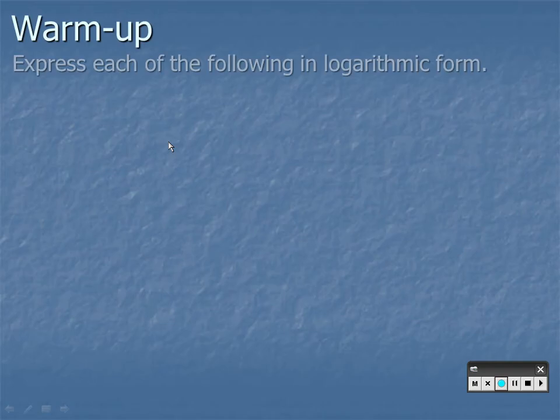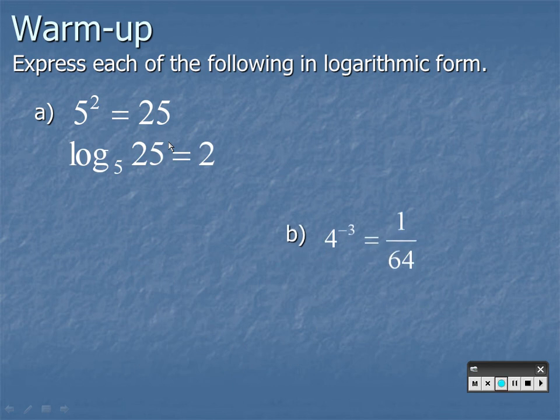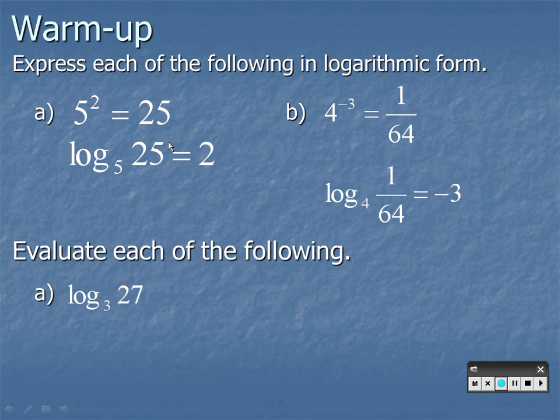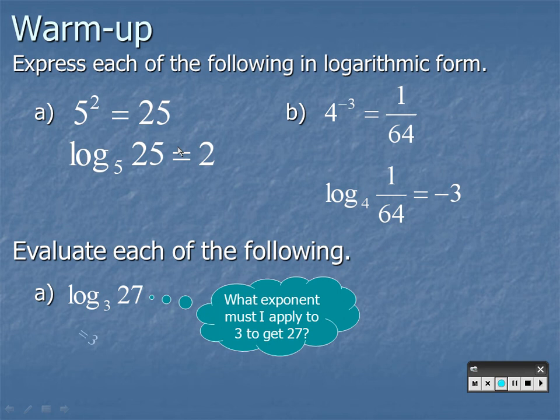Okay, so the power I put on 3 to get 27 is 3. So the answer to log 3 of 27, I've got to get all the way back to that point in the PowerPoint. Power I put on 3 to get 27? What exponent must I apply on 3 to get 27? Let me try it in our calculator and I get 3. Yeah!